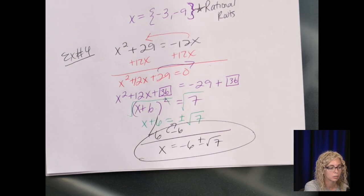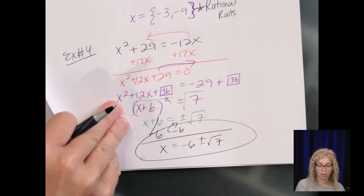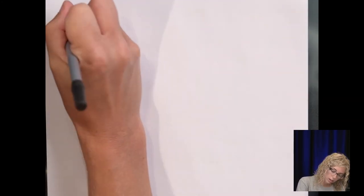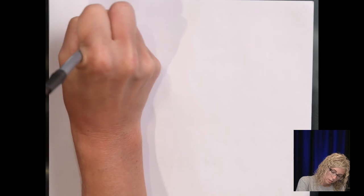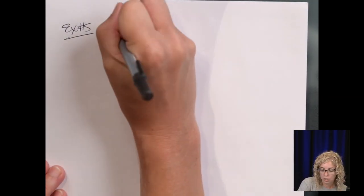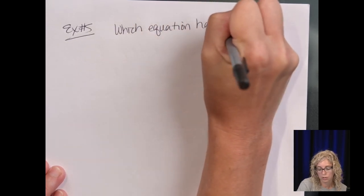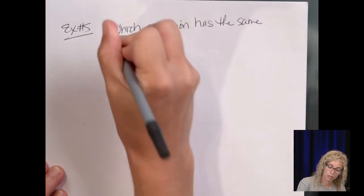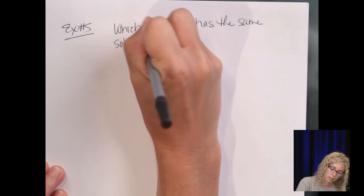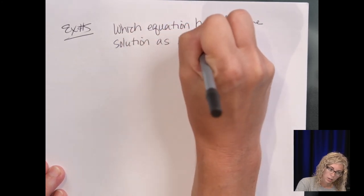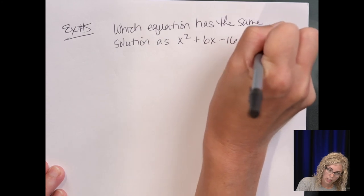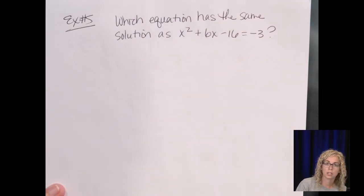We're going to do one more example, and it's going to be multiple choice. This is the last section in delta math. So this is example 5. Which equation has the same solution as x squared plus 6x minus 16 equals negative 3?